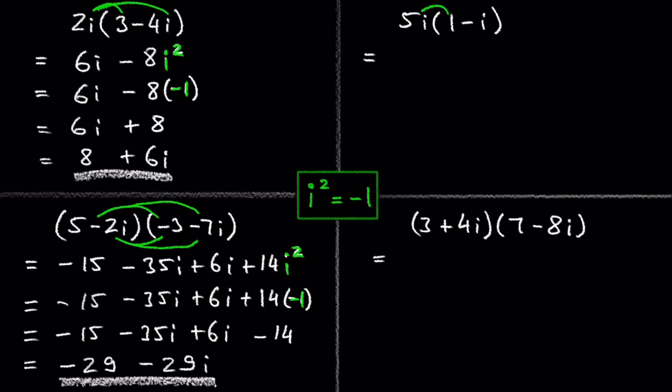5i times 1 is 5i, and 5i times negative i is negative 5i squared. Negative 5i squared is negative 5 times negative 1, which is positive 5. And in standard form we get 5 plus 5i.